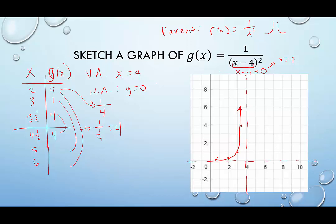Plugging in 5: 5 minus 4 is 1, 1 squared is 1, 1 divided by 1 is 1. Plugging in 6: 6 minus 4 is 2, 2 squared is 4, and 1 over 4 is one quarter. So the right-side points are 4 and a half, 4; 5, 1; and 6, one quarter — confirming the symmetry. We draw a nice smooth curve hugging both asymptotes, and there's the graph of g of x.